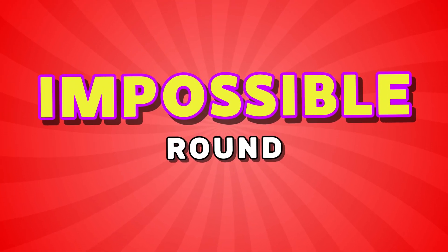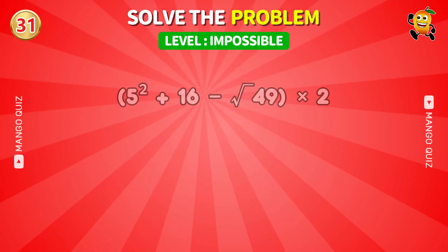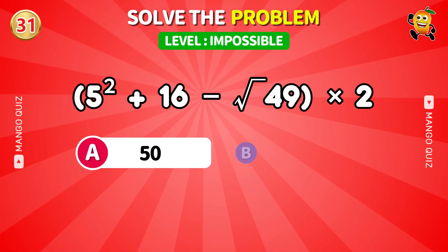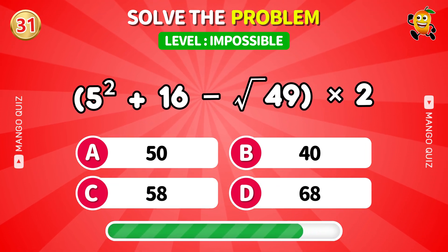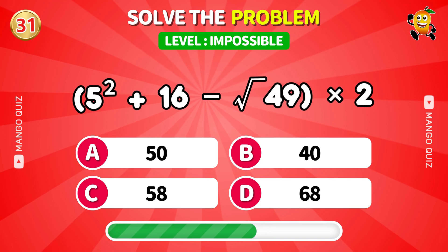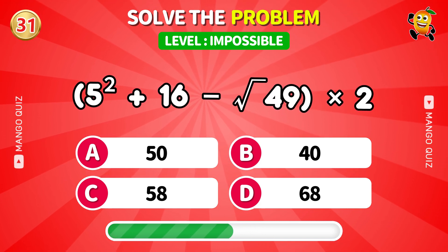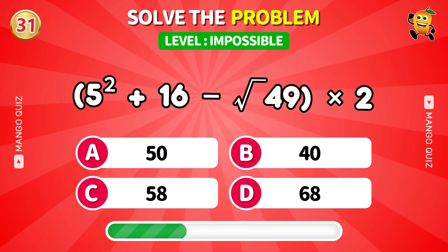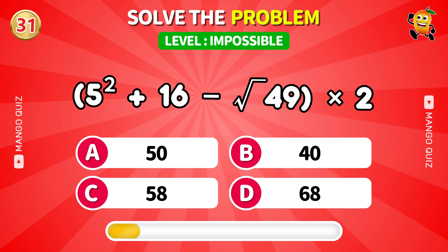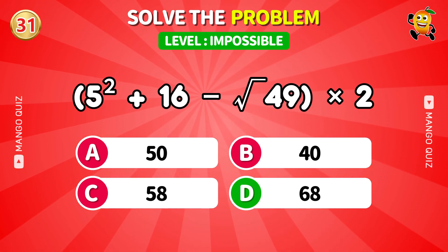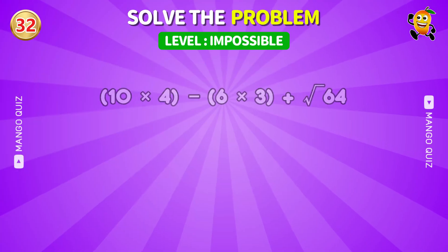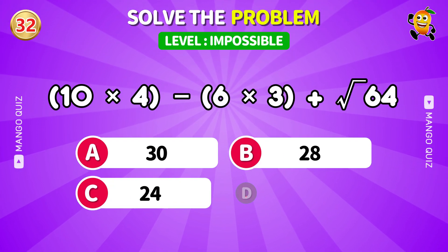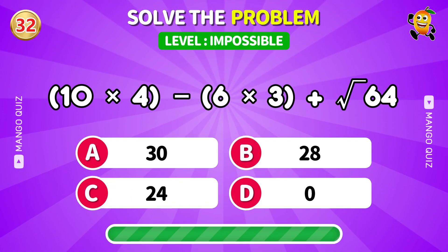Only the smartest will survive this round. 5 squared plus 16 minus root 49 then times 2. Answer: 68. Next: 10 times 4 minus 6 times 3 plus root 64. Answer: 30.